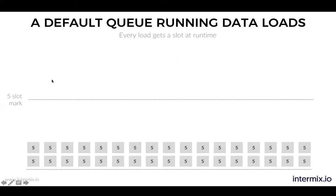Let's look at our default queue. Let's say this is the five-slot mark. At any given point in time, I've created an ETL pipeline that runs two jobs at a time. Each one takes five seconds and they execute. I have five slots, only two queries are running at any given time, so the world is fine. Each query gets a slot. My loads are running just fine.